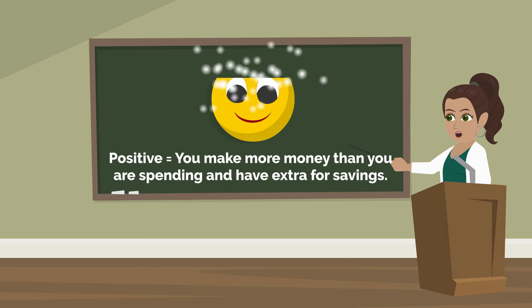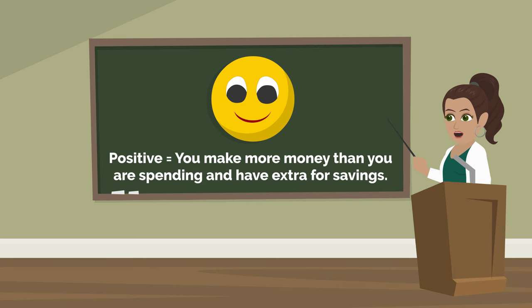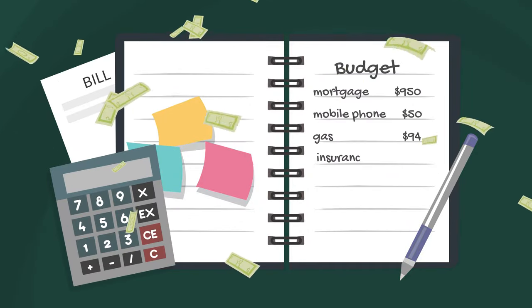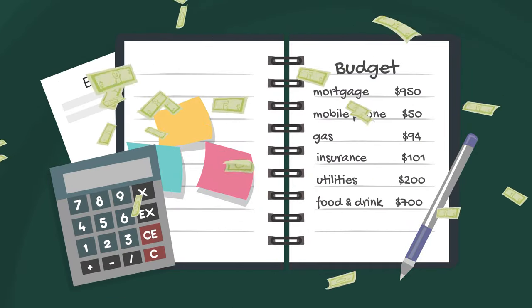The last possible outcome for a budget is positive. A positive budget means that you're making more money than you're spending and you have extra left over to achieve your additional goals. This is the best outcome for any budget. Remember, budgets can empower us to spend our money on the things that we need and want. Thanks for watching today. We hope you join us next time on Funtivity Zone.